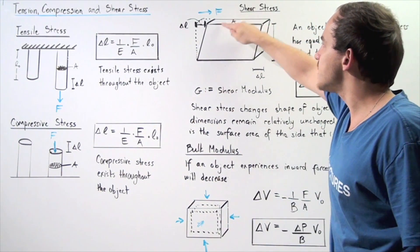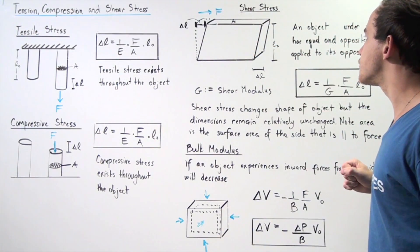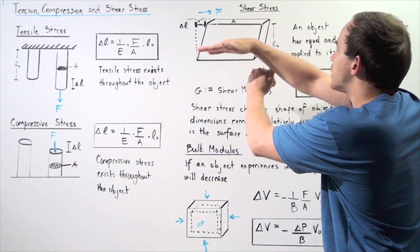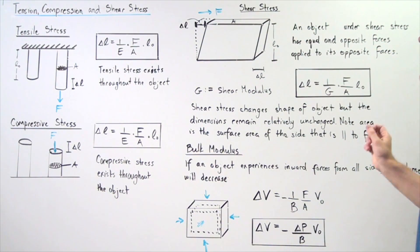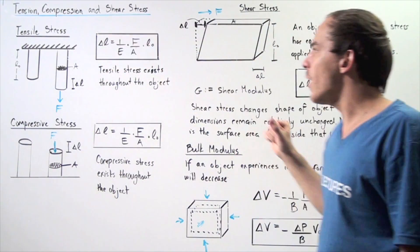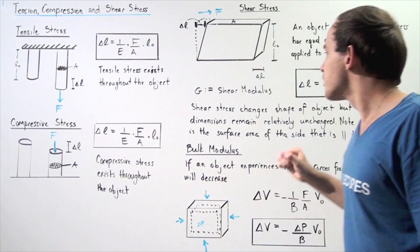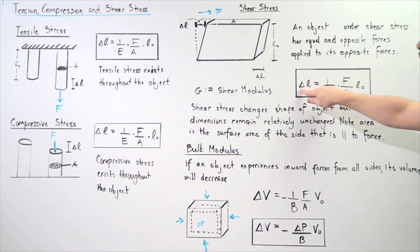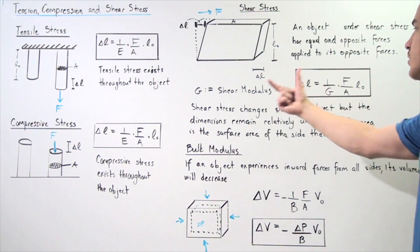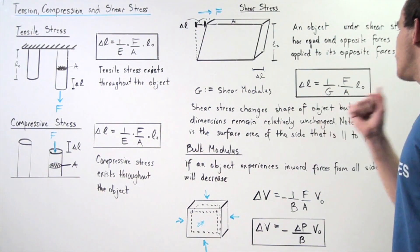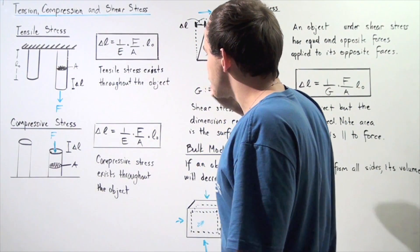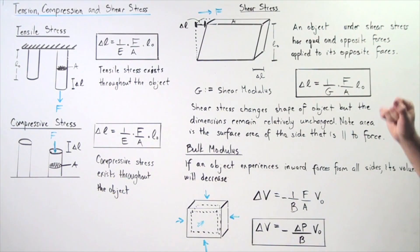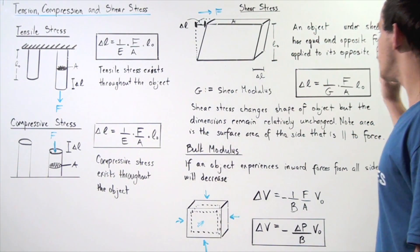The area is given by taking the surface area of the top or bottom face of our object, and the height after the object experiences shear stress is given by L-naught — the height of our object. An object under shear stress has equal and opposite forces applied to opposite faces, as shown. We can use a similar equation, except we replace Young's modulus E with shear modulus G. The change in L is equal to the product of 1 over G multiplied by force divided by area — which is now shear stress — multiplied by the height of the object, L-naught, also given in meters.